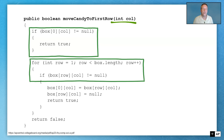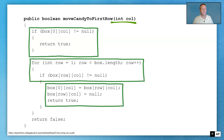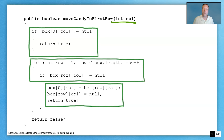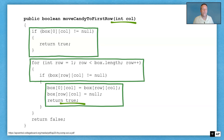If we find a piece of candy in that column — if box[row][col] is not equal to null — we move it up. It's a standard three-line swap: box[0][col] equals box[row][col] to put the candy in the first row, then we set the old location equal to null, then we return true. But if we loop all the way through and never find another piece of candy in that column, we leave the loop and return false.